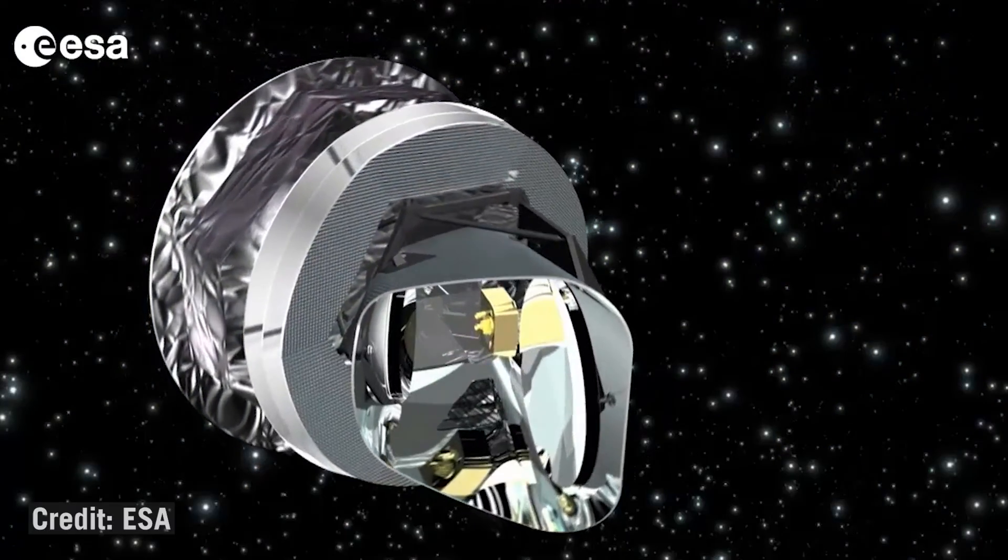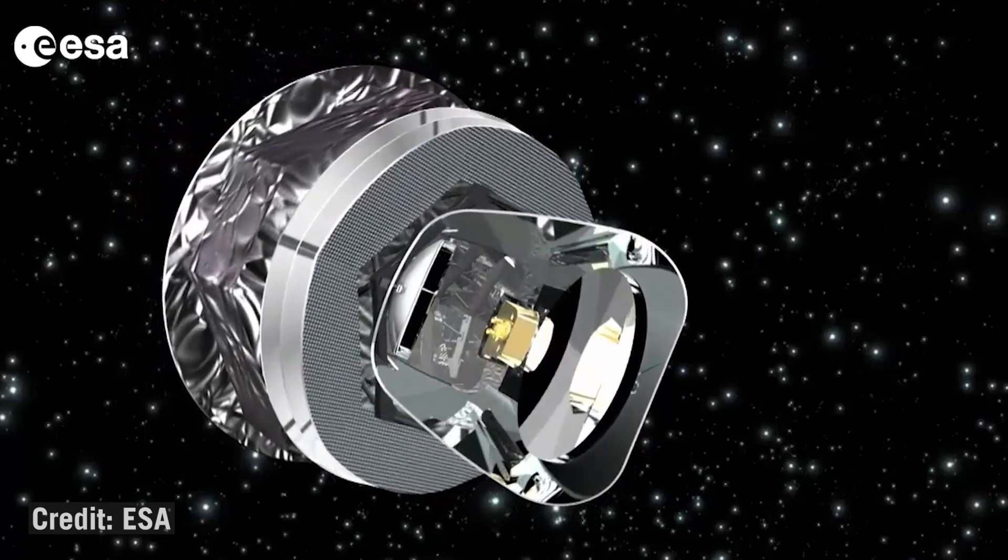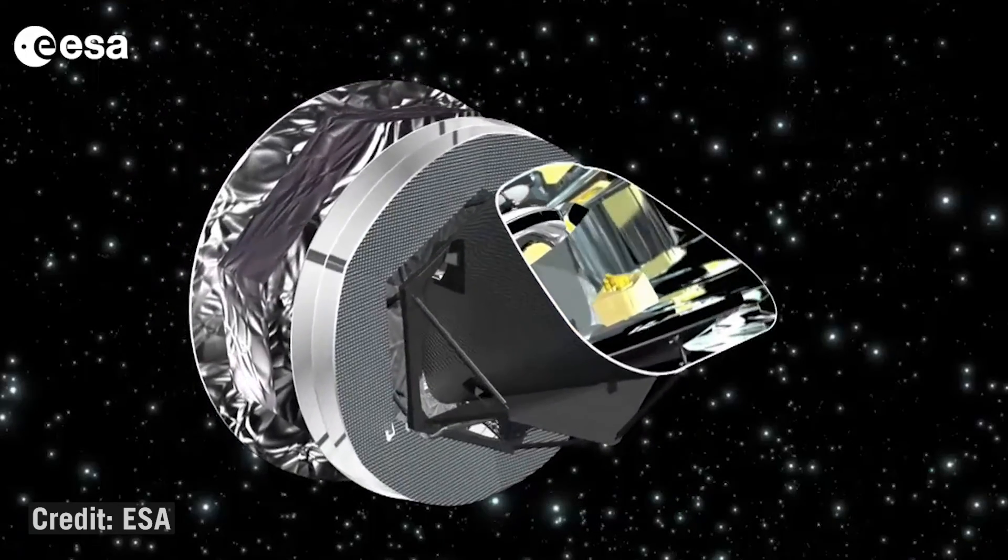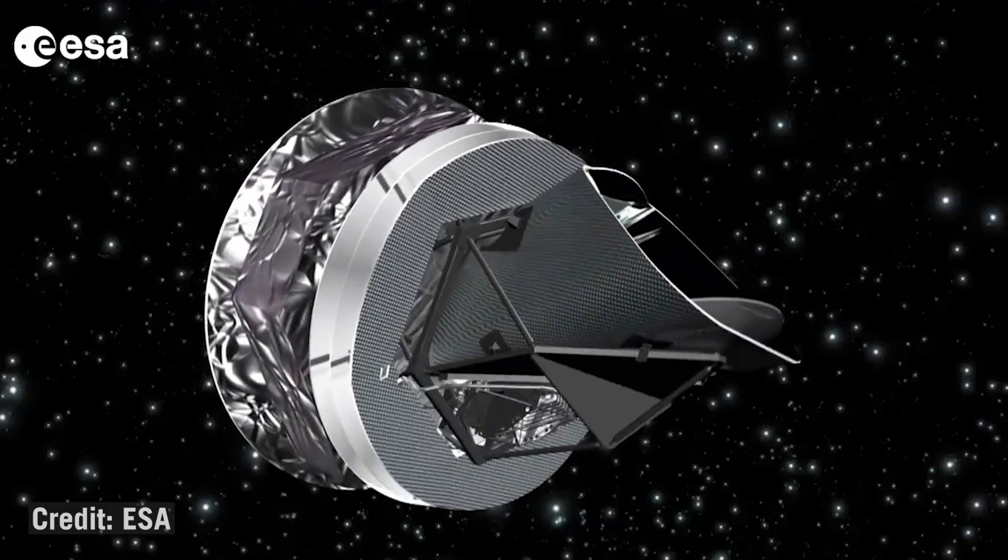And then the third thing you can do that's the most expensive and the most difficult, but in principle the best, is to go into space. So the most recent space telescope for observing the microwave background was the Planck satellite. And the Planck satellite is located in the same neighborhood as the new JWST telescope that everyone's excited about now.